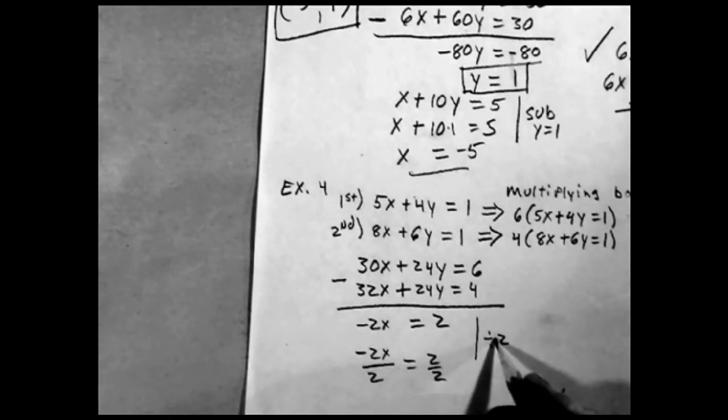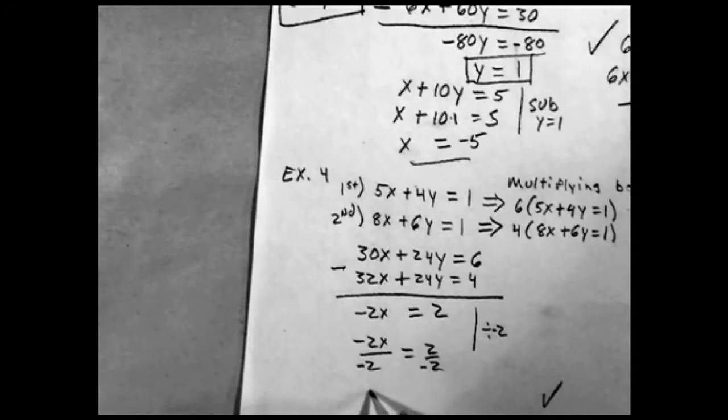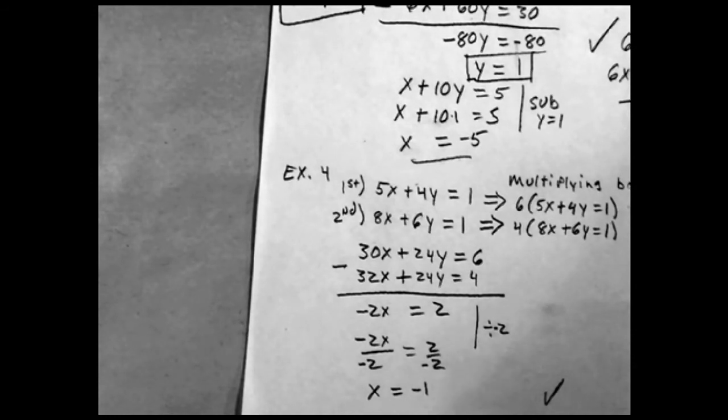And I get—oops, I should divide by negative 2, so I get rid of the negative. x equals negative 1.